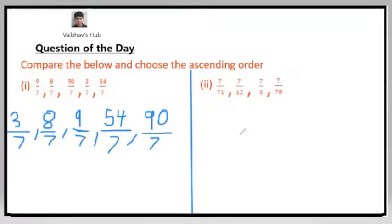Now let us solve this second part. In the second part, the numerators are all the same. So what do we do if the numerators are the same? We will compare the value of the denominators.